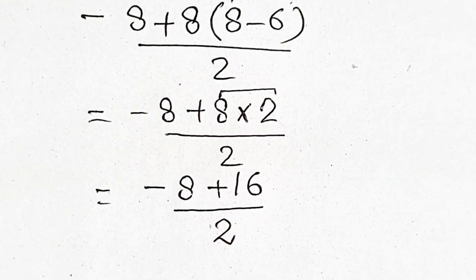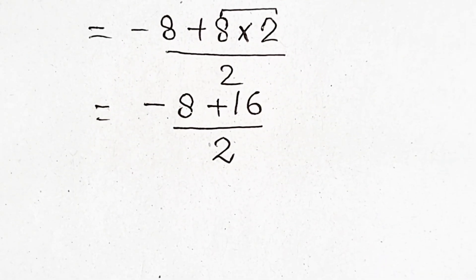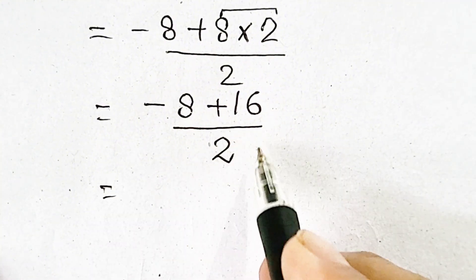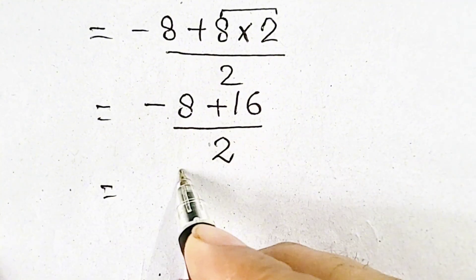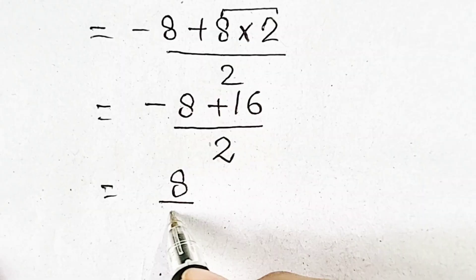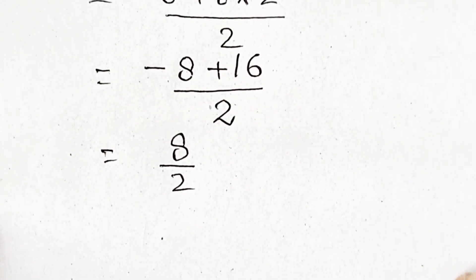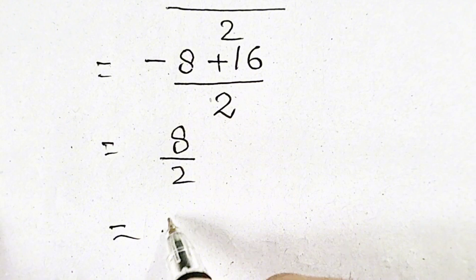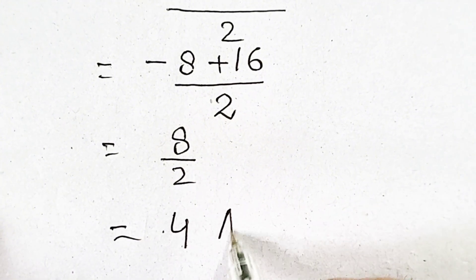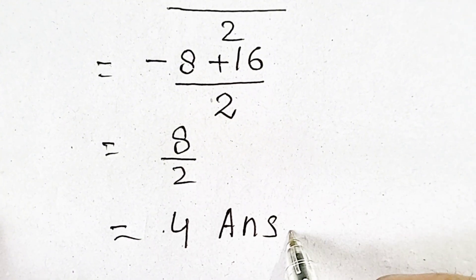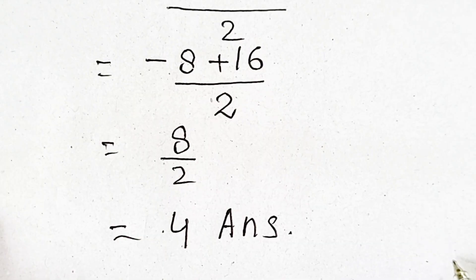Now in the numerator, minus 8 plus 16 will be equal to 8 divided by 2. So 8 divided by 2 will be equal to 4. Hence 4 will be our correct answer. Thank you for watching my YouTube video.